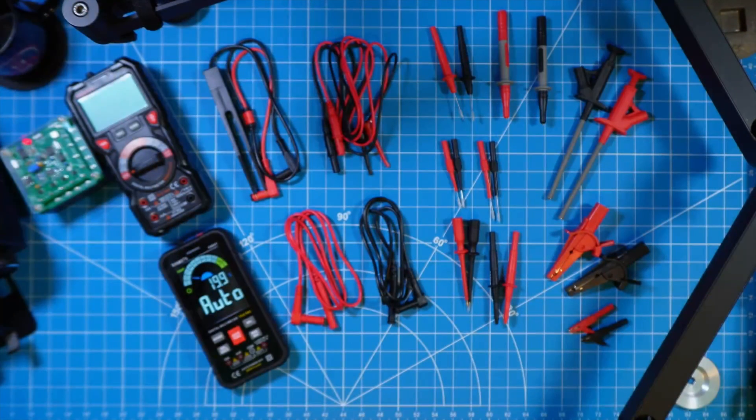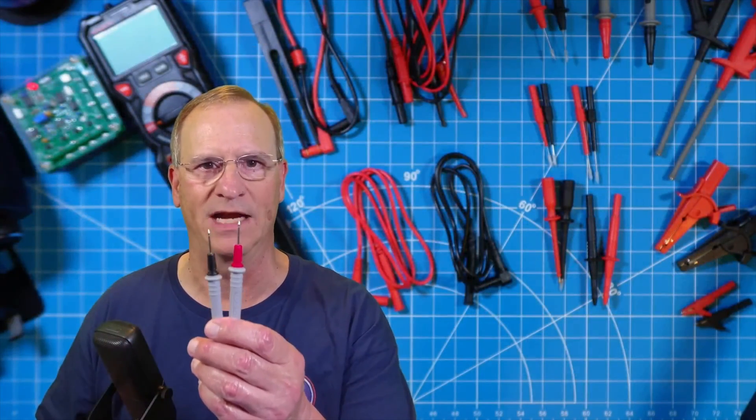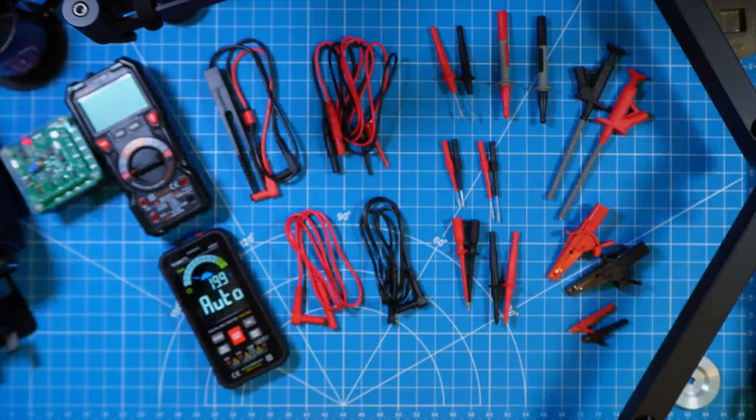If you end up with a kit like this, what you have is test leads that allow you to grab onto something or touch it in such a way that you're not having to keep these in place with the item you're trying to test. That's the benefit of going with a test lead kit.